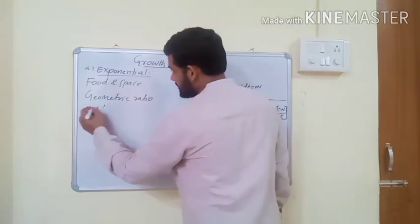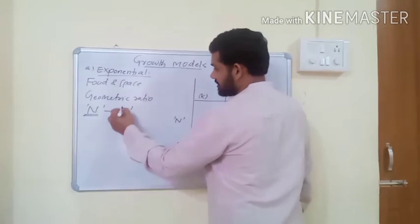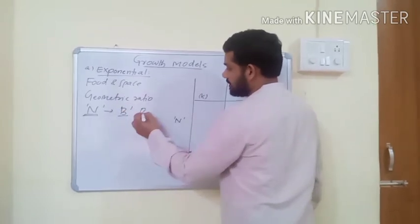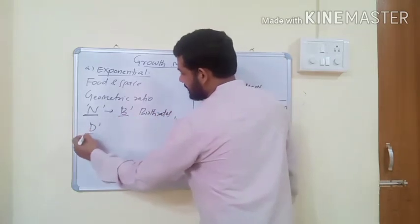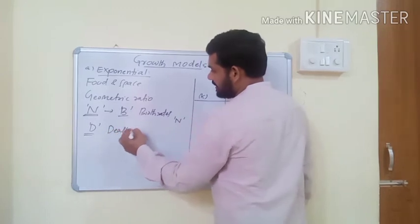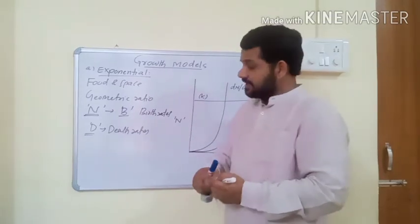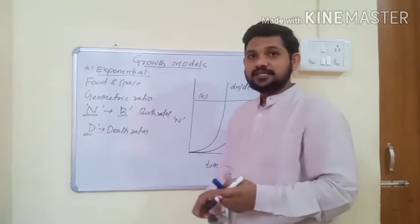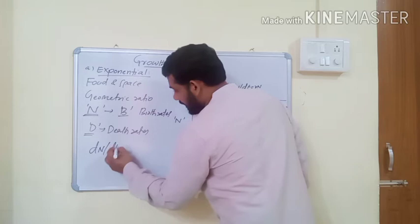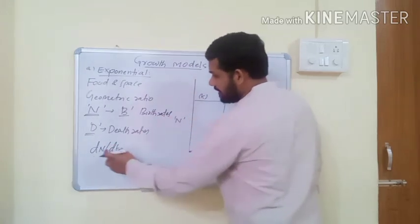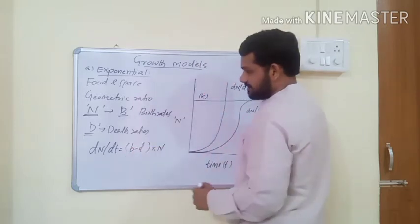If in a population of size N, birth rates of population density are represented as b, and death rates are represented as D, then the increase or decrease in population density during a given time period will be: dN/dt equals birth rates minus death rates, multiplied by population density.